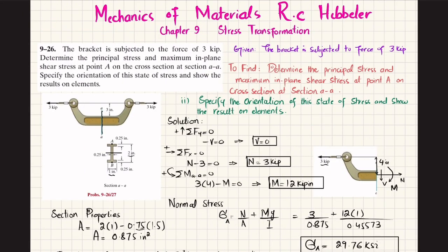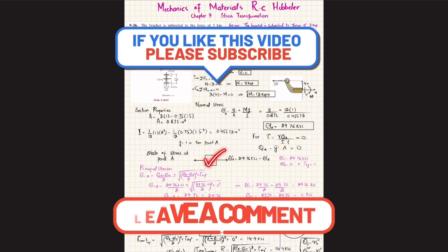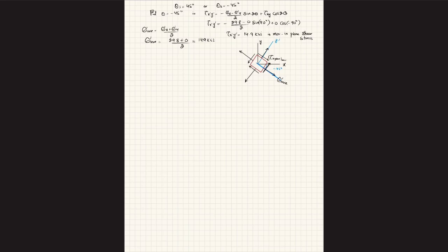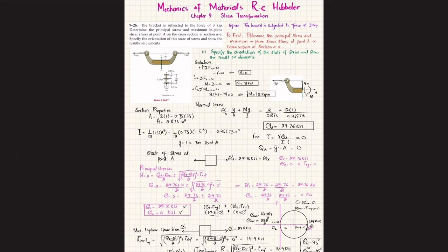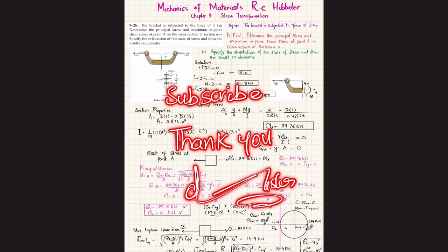That covers Problem 9-26, in which we calculated the principal stresses σ₁ and σ₂, represented them on an element, determined the maximum in-plane shear stress using both the normal equation and Mohr's circle, and found the average normal stress at orientation θ_s = −45°. I hope you enjoyed this video. If you're new to the channel, please subscribe and press the bell icon for notifications. Thank you for watching.